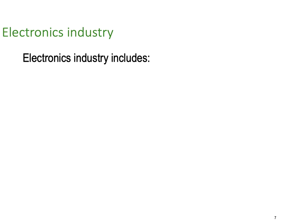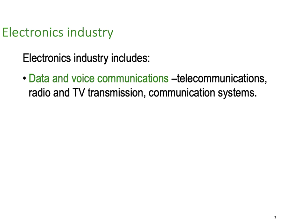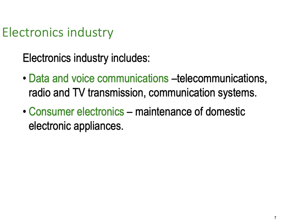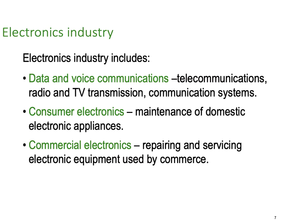The electronics industry includes data and voice communications, radio, TV transmissions, communication systems, and a lot of that is often done with optical fibre these days. We have consumer electronics — maintenance of domestic electronic appliances like TVs and inverter air conditioner systems; your own computer would be a domestic electronic appliance. We also have commercial electronics: repairing and servicing equipment like photocopiers and large computer server systems.